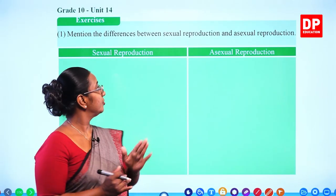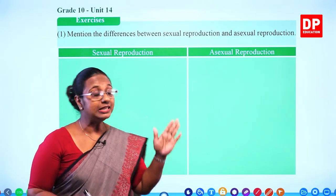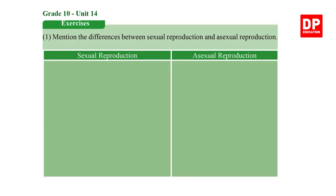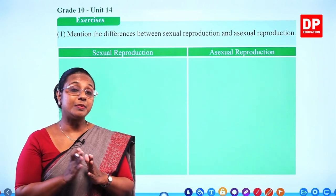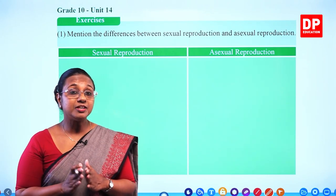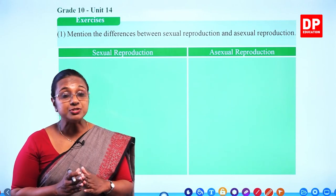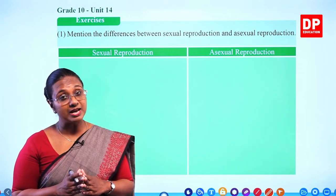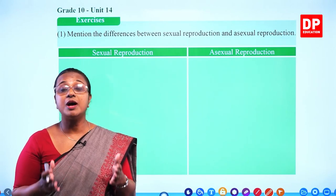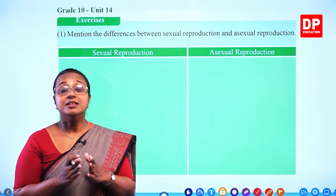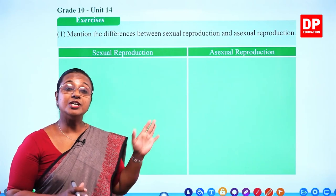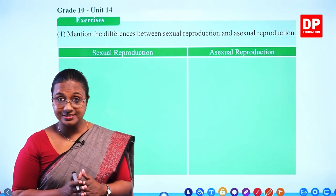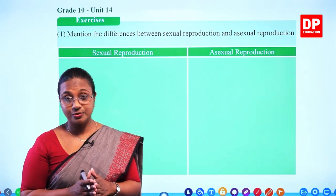Hello, my dear students. Now I am going to discuss the exercise of Grade 10, Unit 14. You all can remember the lesson Continuity of Life. In the lesson, we discussed the two main types of reproduction: asexual reproduction and sexual reproduction. Thereafter, we discussed the different processes of natural and artificial vegetative reproduction of plants, then sexual reproduction of plants and sexual reproduction of humans. I am sure you would have already answered the questions in your textbook. Now I am going to discuss those questions.